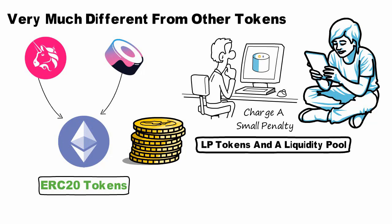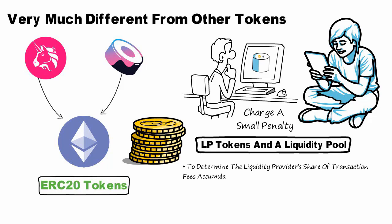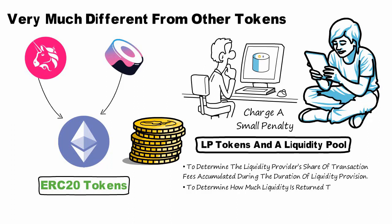The relationship between LP tokens and the proportional share of a liquidity pool is used most commonly in at least two cases: to determine the liquidity provider's share of transaction fees accumulated during the duration of liquidity provision, and to determine how much liquidity is returned to liquidity providers from the pool when LPs decide to redeem their LP tokens.